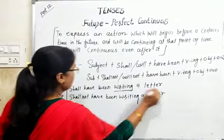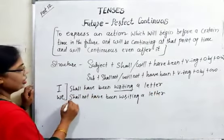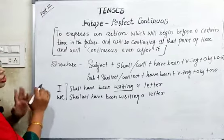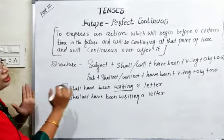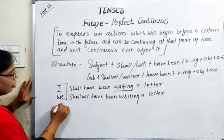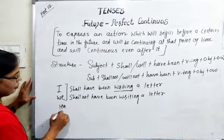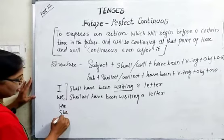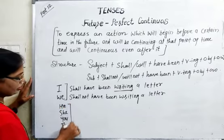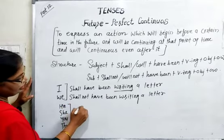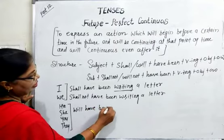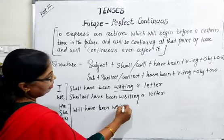यह positive and negative statement बनता है future perfect continuous tense में — जो action future में start होके continue है। दूसरे subjects जैसे she, you, they — second and third person pronouns के आगे will का use होता है: will have been writing a letter।